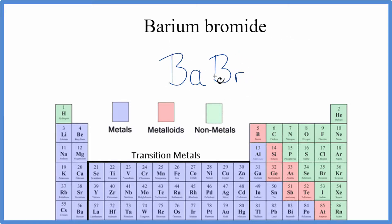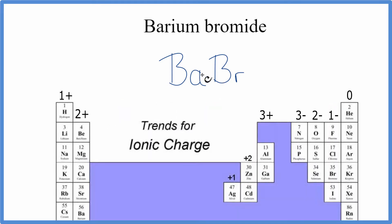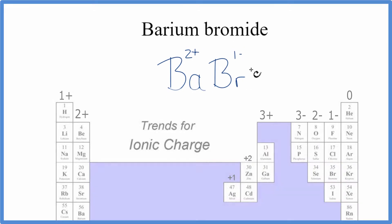For ionic compounds, when we write the formula, we need to take into account the ionic charge. So back to the periodic table — barium is in group 2, which has a 2+ ionic charge. Bromine has a 1− ionic charge.